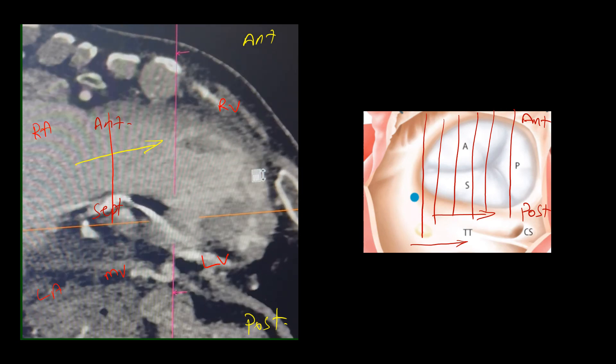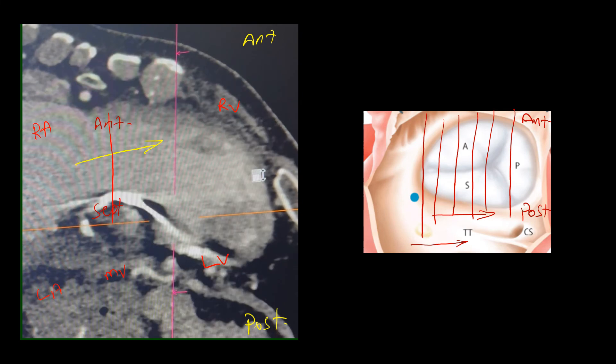As we go far inferiorly, pacemaker lead comes into the view. Now, we don't have the anterior leaflet in the view anymore, so what we have is mostly the posterior leaflet and septal leaflet. Here we have the lead in view, which is in the most posterior part of the valve and most inferior part as well. So the lead is situated in this area, and it seems that it is embedded into the tissue, and it is not in the middle of the valve where it should be.